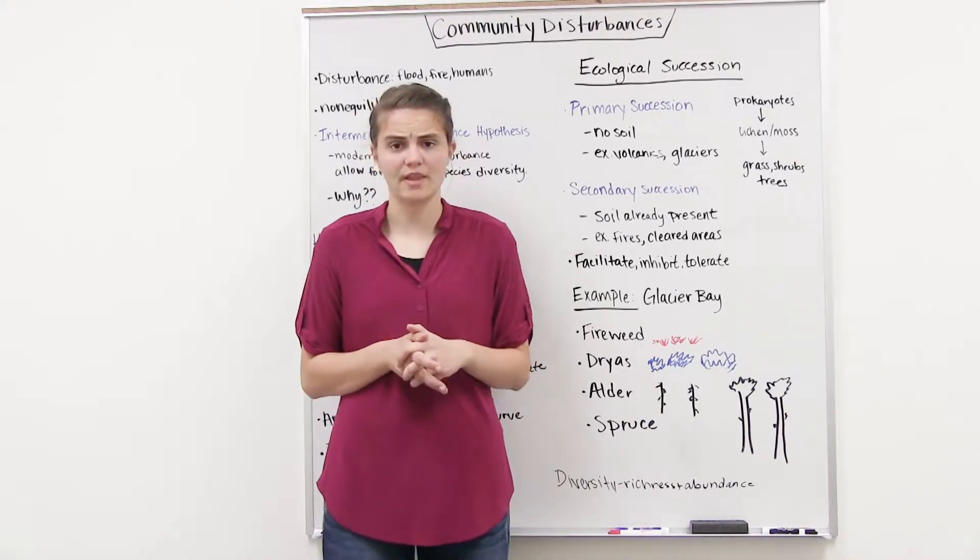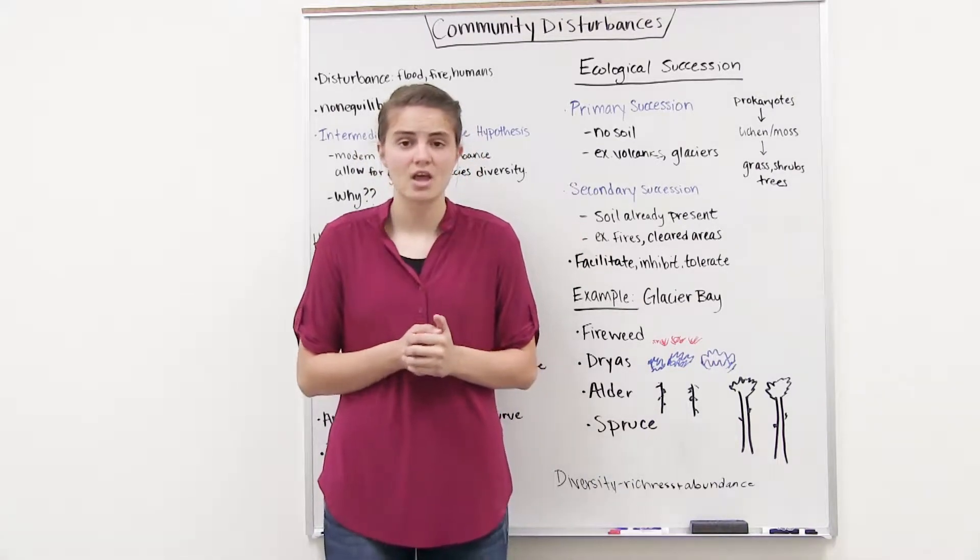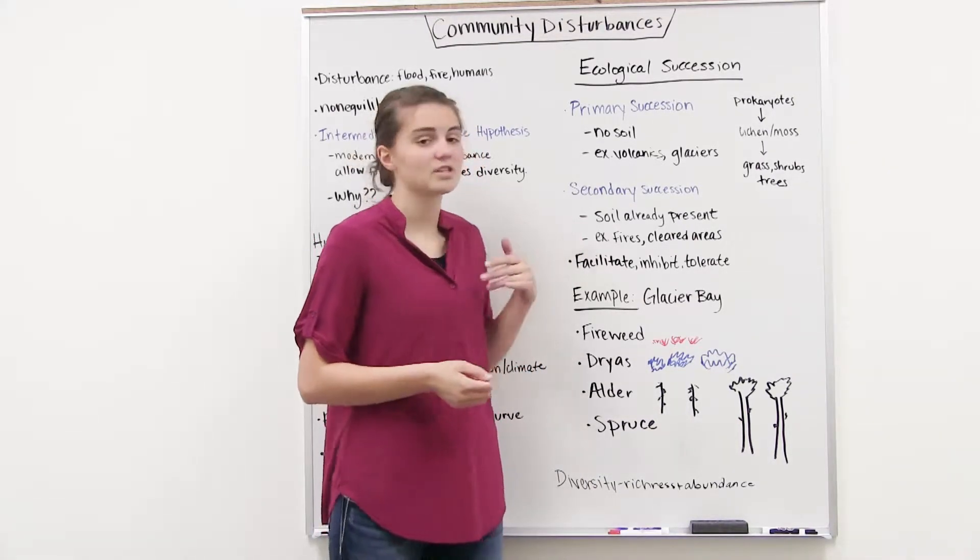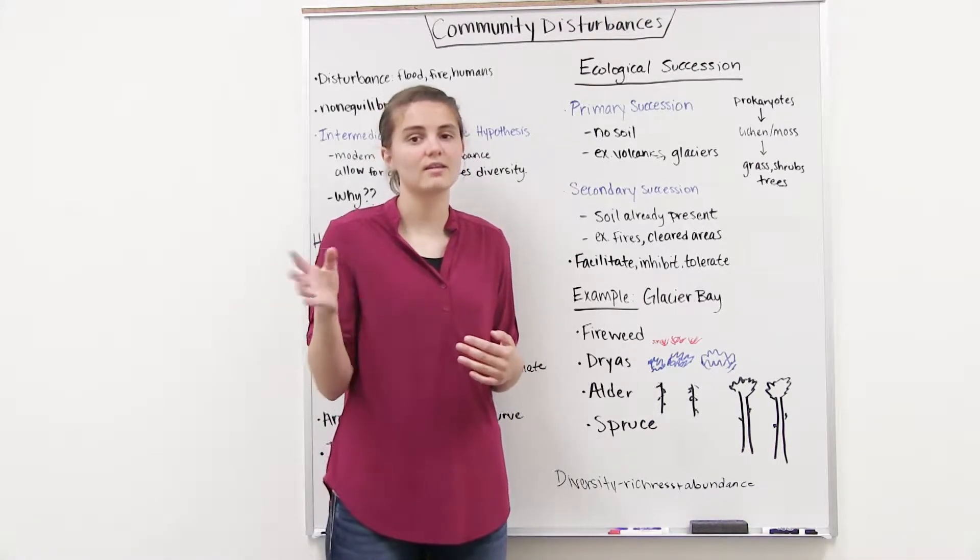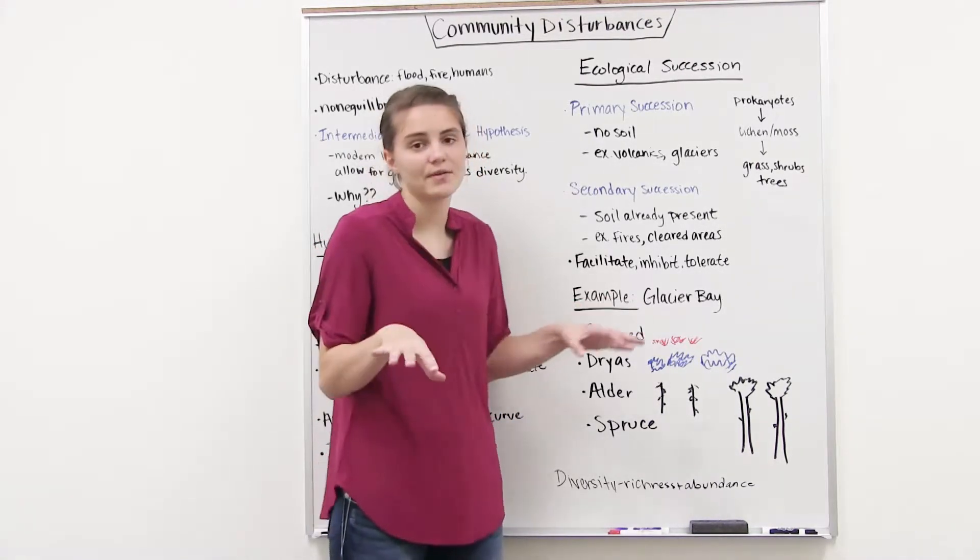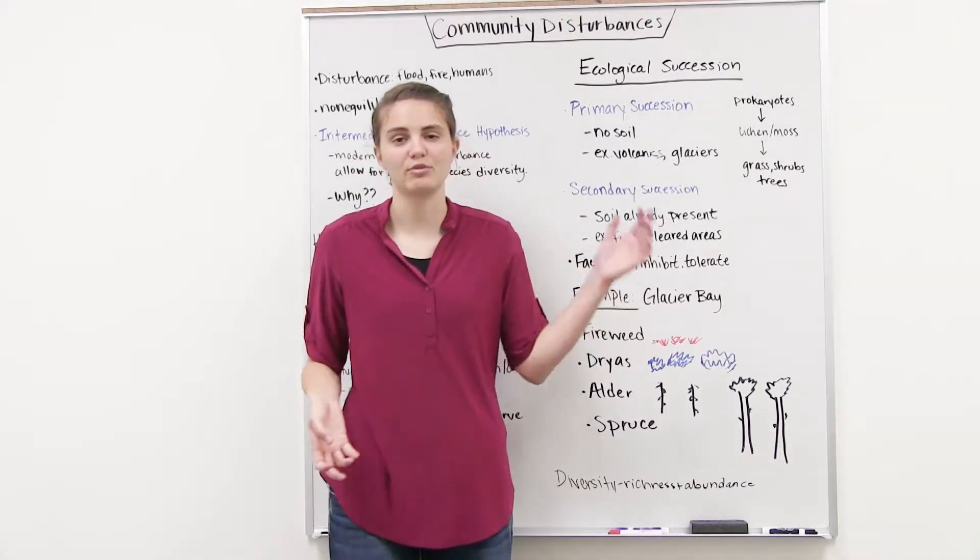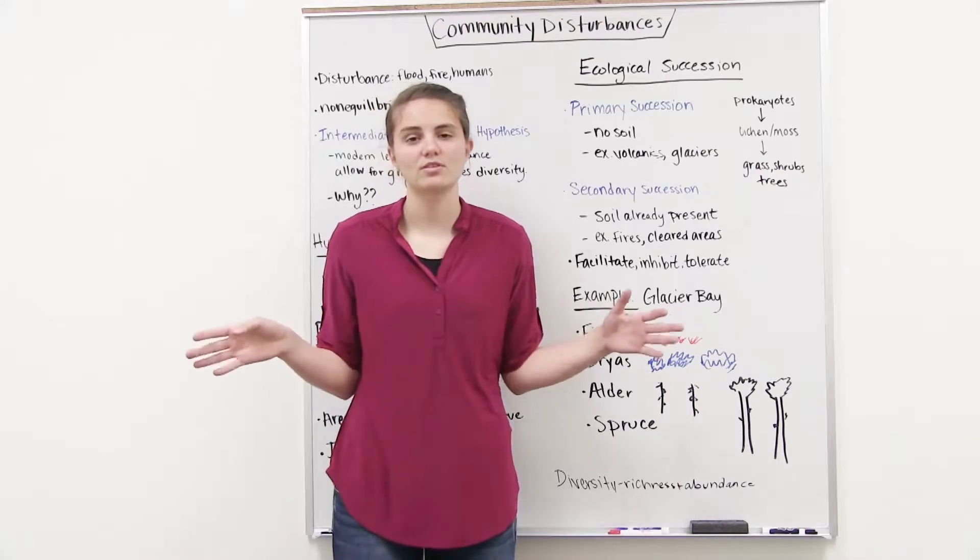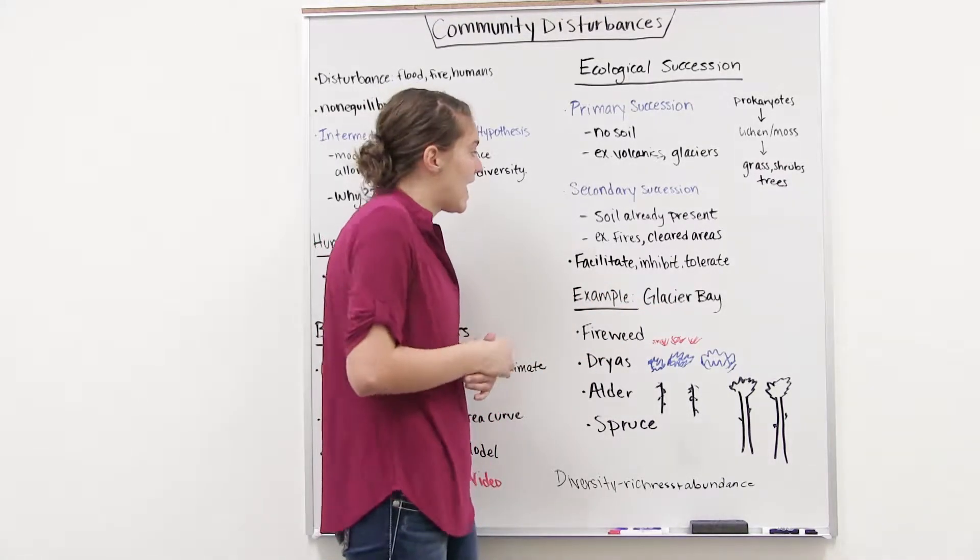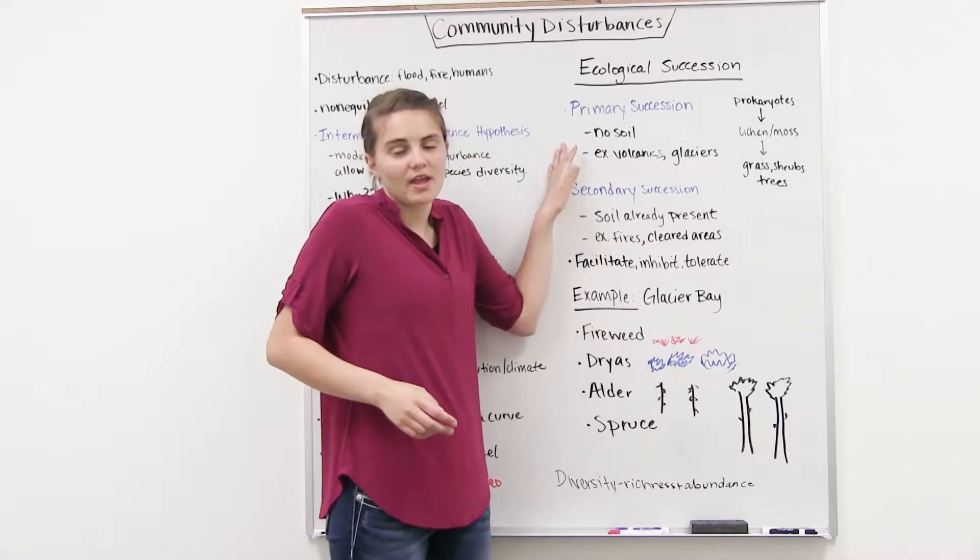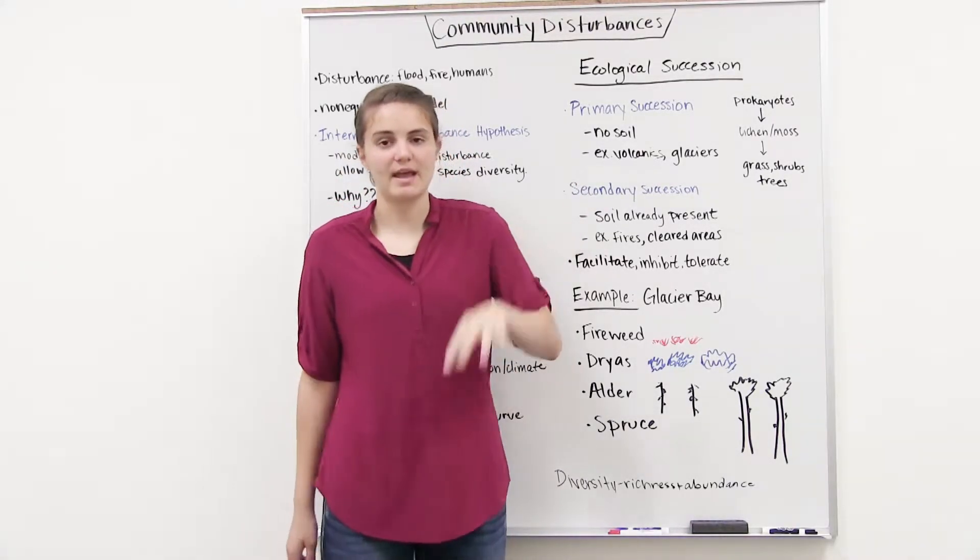Secondary succession, on the other hand, deals with places where soil is already present. So what happened, the disturbance was something that just cleared off the top kind of layer of the species, the plants and some of the animals and things, but it didn't get rid of the soil. So that's things like fires, or if we cleared an area for farming and then we abandoned it later, maybe the soil's there, but there's nothing growing on top of it. And so whereas this one's kind of starting from scratch, this one already has something to work with, we just have to put something back in there.